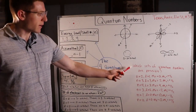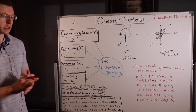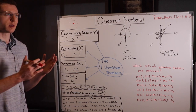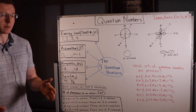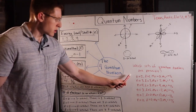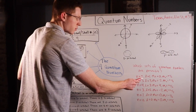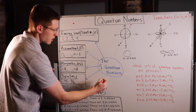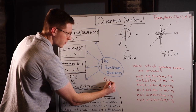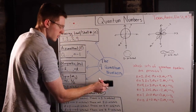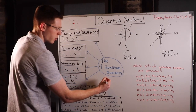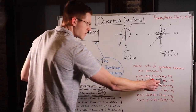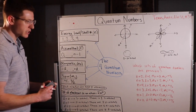Now let's run through some examples: which of the following sets of quantum numbers are possible? First: N equals 2, L equals 1, M sub L equals 0, M sub S equals positive 1/2. If N equals 2, L can be 0 or 1 — so L equals 1 is fine. M sub L must be between negative L and positive L, so negative 1, 0, or 1 — M sub L equals 0 checks out. And M sub S just has to be positive or negative 1/2, so everything checks out. This is a possible set.